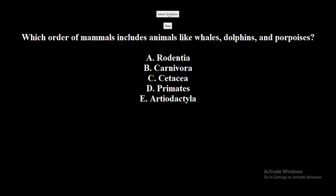Which order of mammals includes animals like whales, dolphins, and porpoises? A. Rodentia. B. Carnivora. C. Cetacea. D. Primates. E. Artiodactyla. The correct answer is Cetacea.